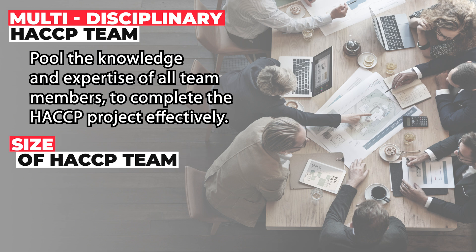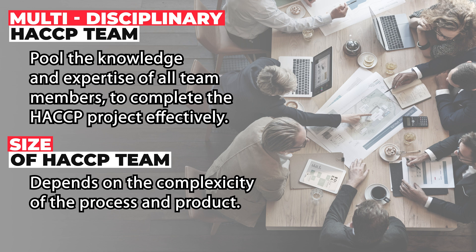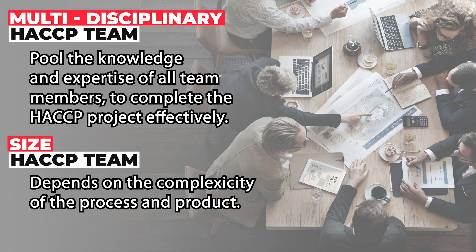The second characteristic to consider is the size of the team. A lot of people think that if an organization is very big, they will have a big HACCP team — it's not necessary. It depends on the type and nature of the product and process. If we have a complicated or specialized process or product, the people with specialized knowledge need to be on the team, which may increase the team size. On the other hand, a very large organization with a less complicated product may need a smaller team. It all depends on what is required to complete the project efficiently and effectively.